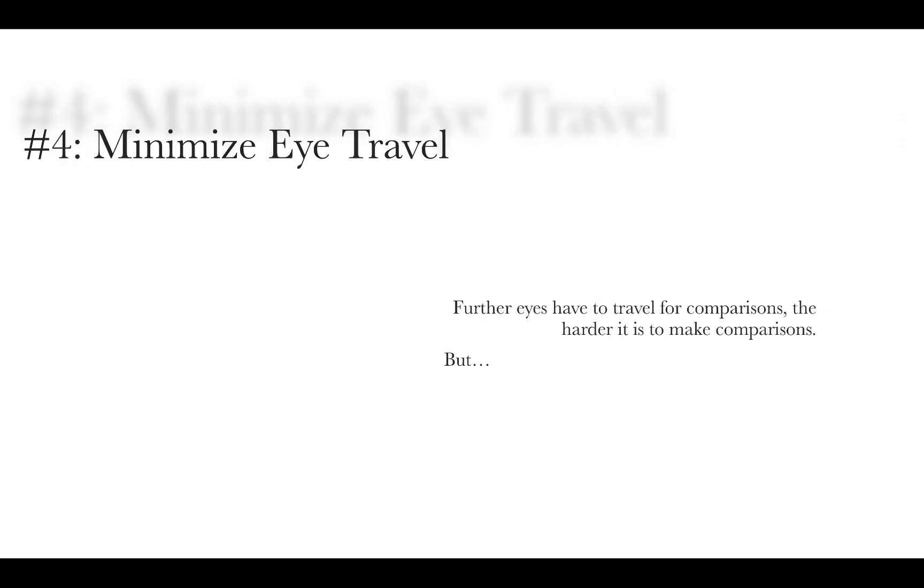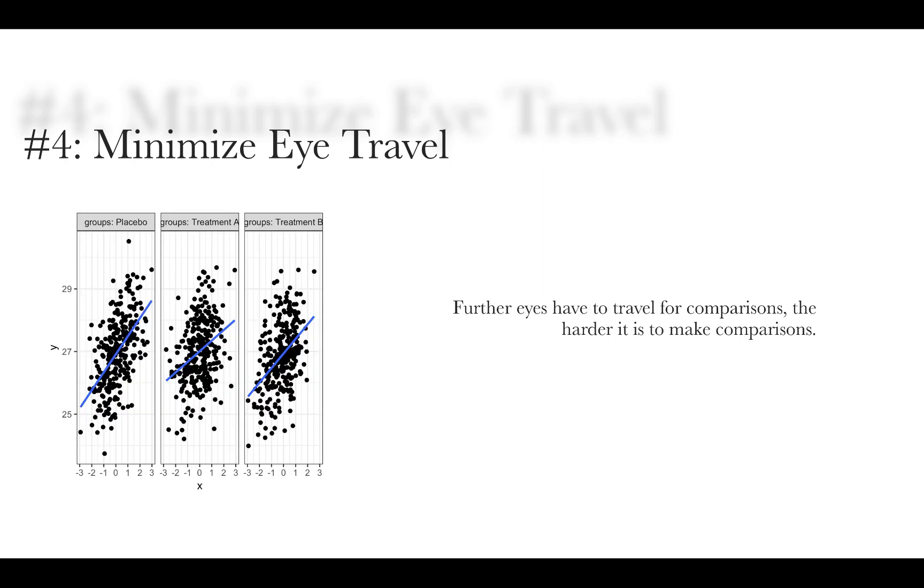Number four, we want to minimize eye travel. So the further the eyes have to travel to make comparisons, the harder it is to actually do the comparison. But when we start paneling to minimize overlap, we now have to compare across panels. So for example, if I were to ask you whether the placebo is steeper than the treatment B, you might be able to guess it, but it's going to take a little bit of effort to be able to figure out which one it is.